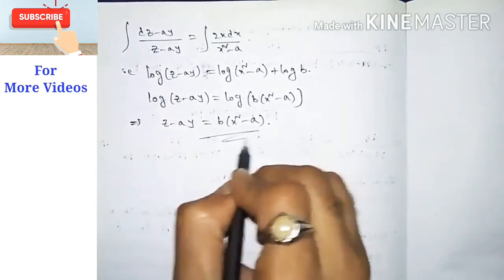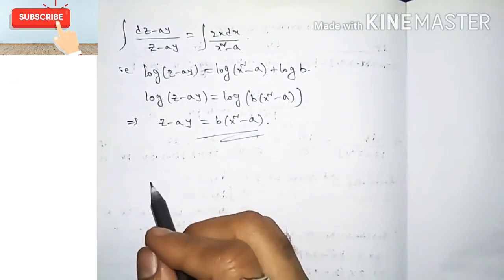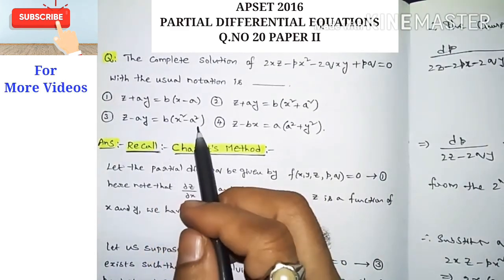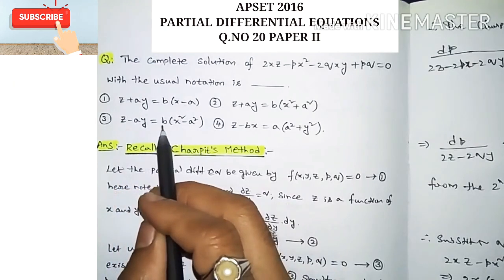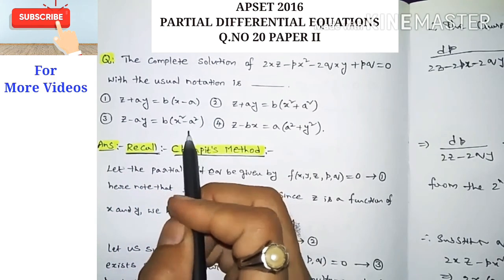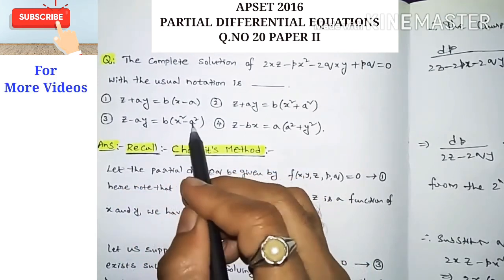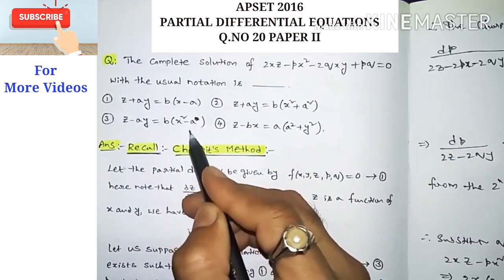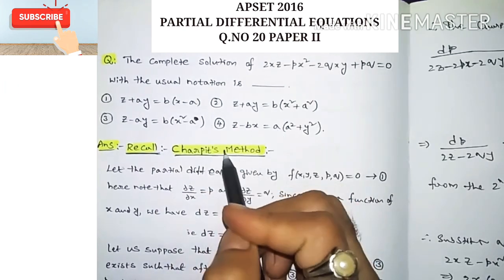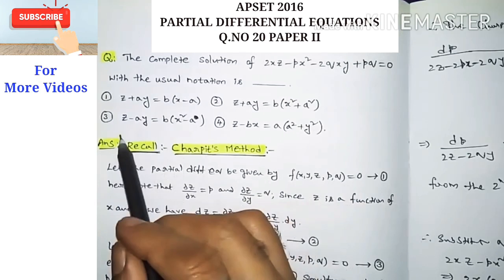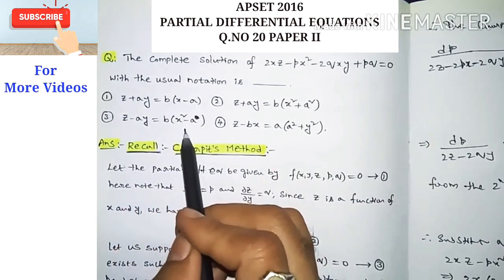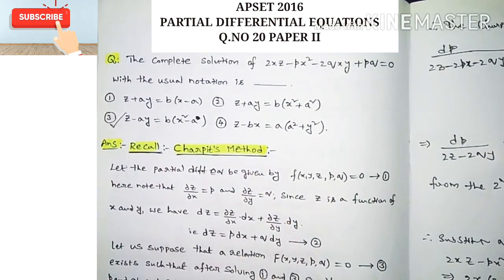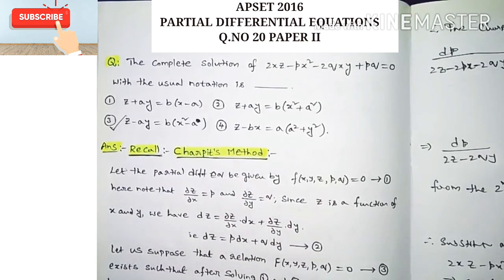Taking exponentials, we get z − ay = b(x² − a). This is the required general solution of the given partial differential equation. Option number 3 is closest to correct, though it states z − ay = b(x² − a²); our solution gives z − ay = b(x² − a). Option 3 is the correct answer. I hope you liked this video — please share, subscribe. Thanks for watching.